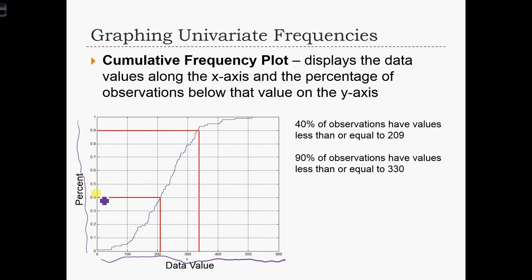So in this case, this first red line shows us that for a data value of 209, which is over here, there are exactly 40% of the observations, 40% of the observations have a data value below 209.